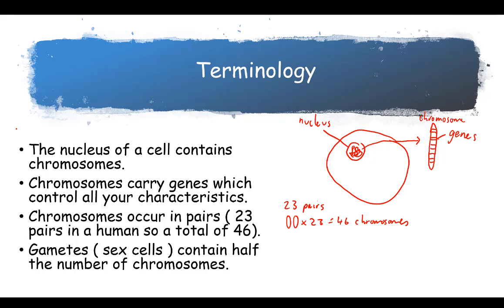Gametes or sex cells contain half the number of chromosomes. We sometimes say gametes are haploid, which means they've got half the number of chromosomes, whereas these other human cells are diploid.